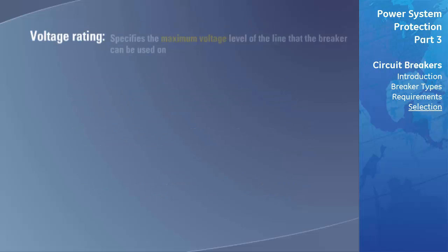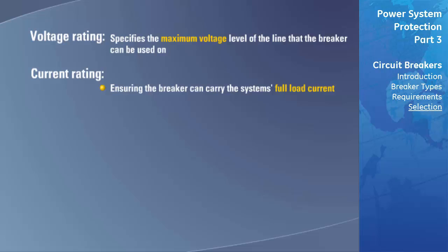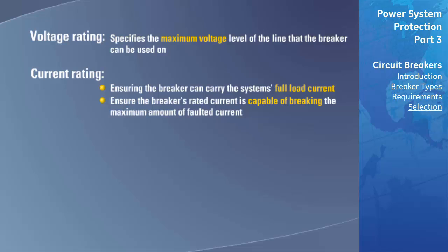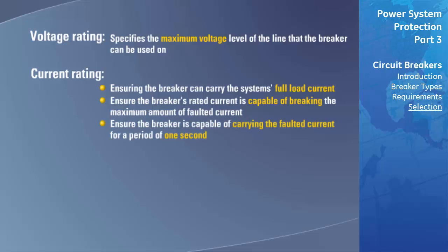The voltage rating of the breaker specifies the maximum voltage level of the line it can be used on. Three current factors must be considered: first, ensuring the breaker can carry the system's full-load current; second, ensuring the breaker's rated current is capable of breaking the maximum faulted current; and third, ensuring the breaker is capable of carrying the faulted current for a period of one second.